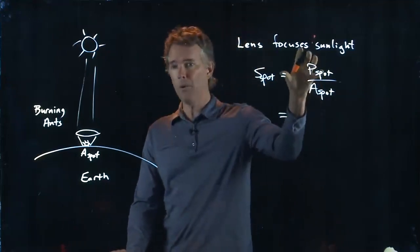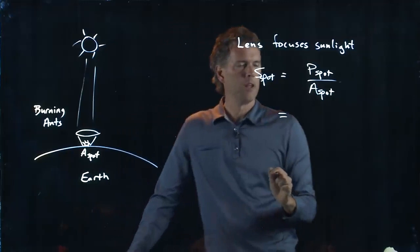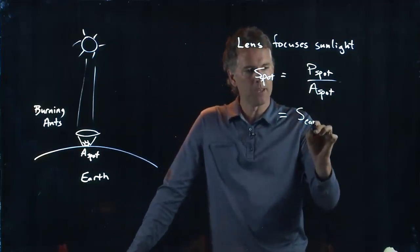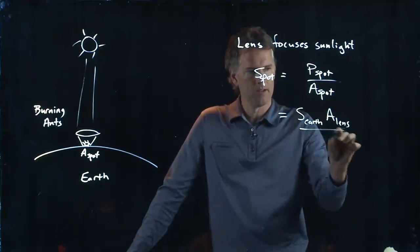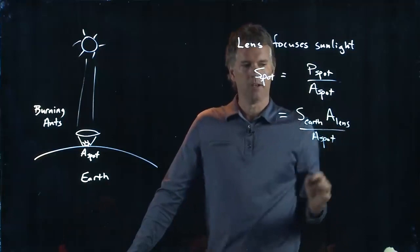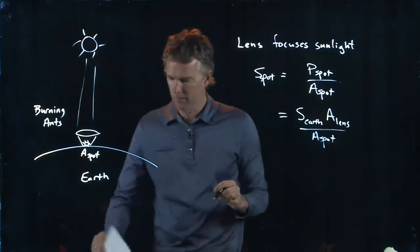But how much power you collect with your lens, that is just S at the earth times the area of the lens. And then we have to divide by the area of the spot.